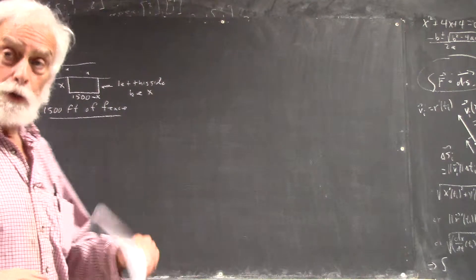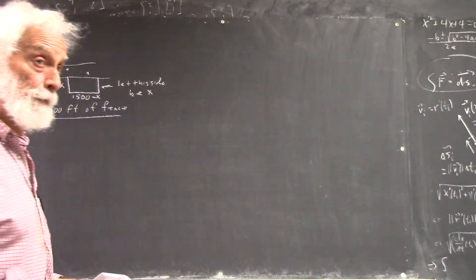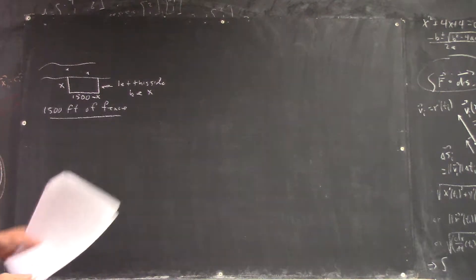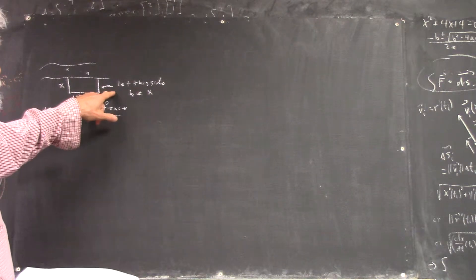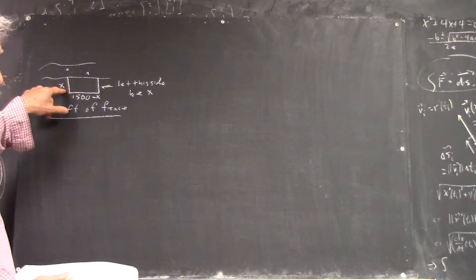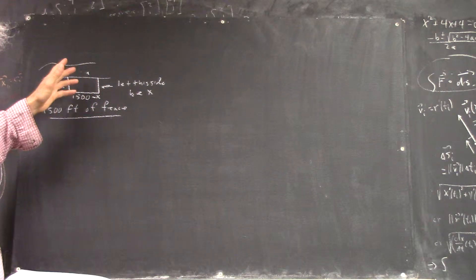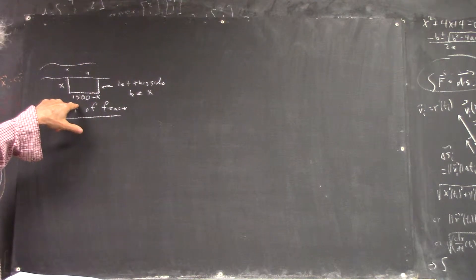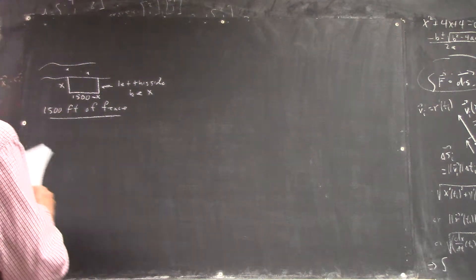Okay, I don't have time to, I don't want to take the time to write that down. Okay, but that should be clear. If this side is x, this side is also x, and you've only got fifteen hundred feet of fence, this is going to be the rest of it, right? Fifteen hundred minus two x. So, what's the area?